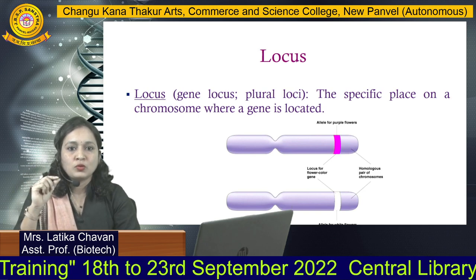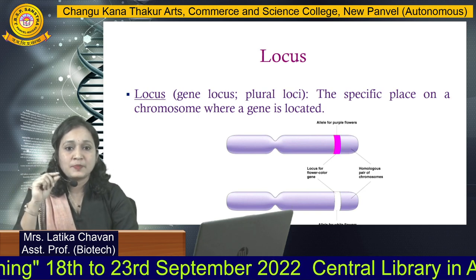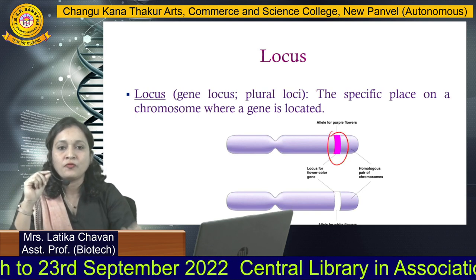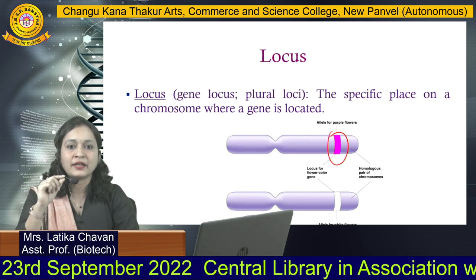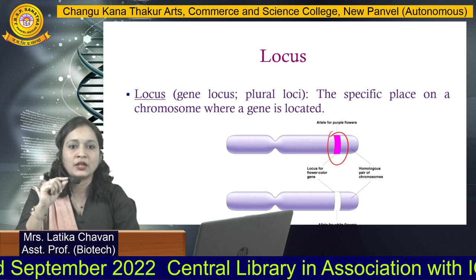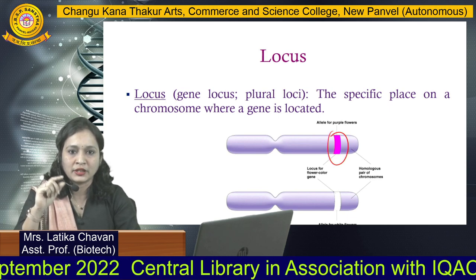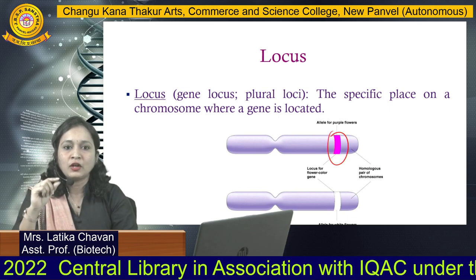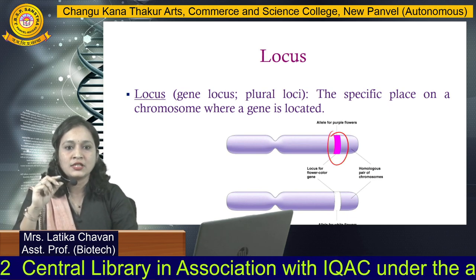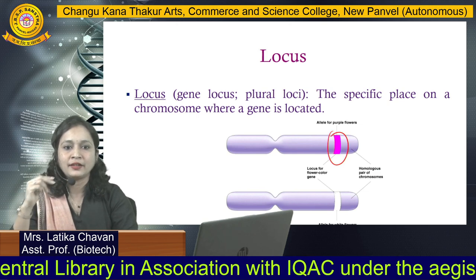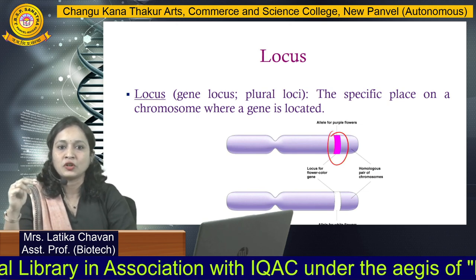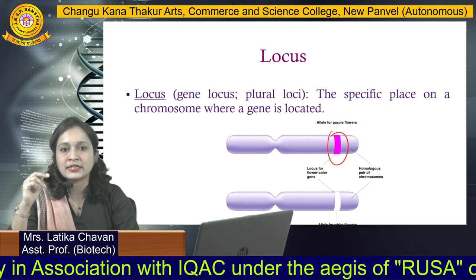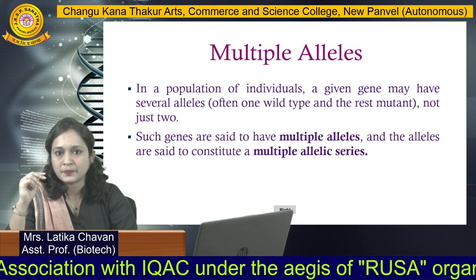Now what is a locus? It is a specific place on the chromosome where a respective gene or allele is located. We need to find out the locus first, and then we can target our gene of interest and find how it is getting expressed.